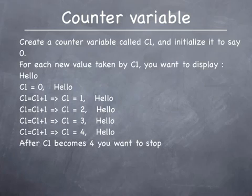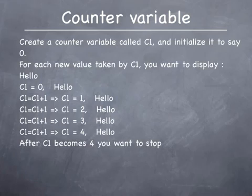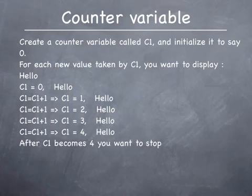The action that the program must perform is to display the word hello on the screen five times. For the first value of C1, which is 1, we display the word hello on the screen using a DBMS output line statement. We then use an increment statement that will increase the existing value of C1 by 1. For this value of C1, we also display the word hello on the screen. Once again, we use an increment statement to increase the existing value of C1 by 1 so C1 will become 2. For this value of C1, we once again display the word hello on the screen.